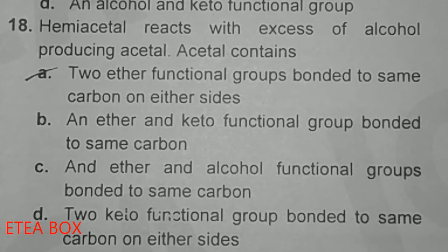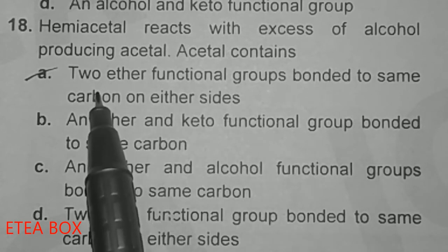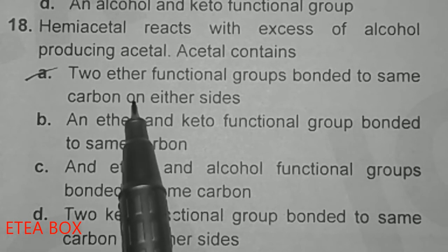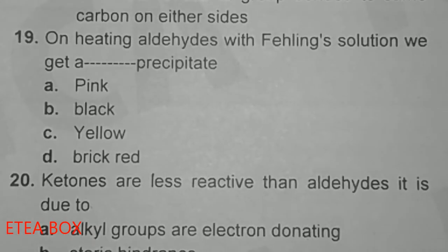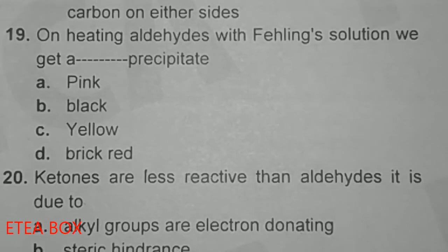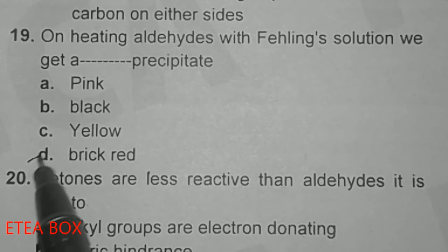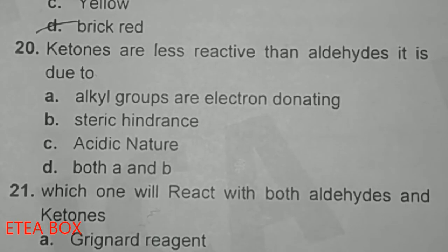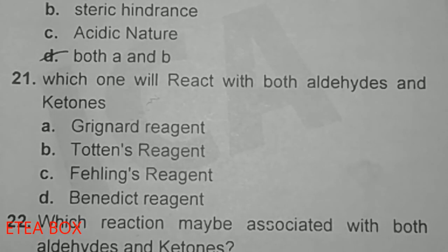Acetal is also called gem ether — gem means the same functional group on one carbon, while vicinal (vic) means the same functional group on adjacent carbons. So acetal is a gem ether containing two ether functional groups on the same carbon. On heating aldehyde with Fehling's solution, a brick-red precipitate is obtained. Ketones are less reactive than aldehydes due to steric hindrance plus alkyl group effects; option D is correct.